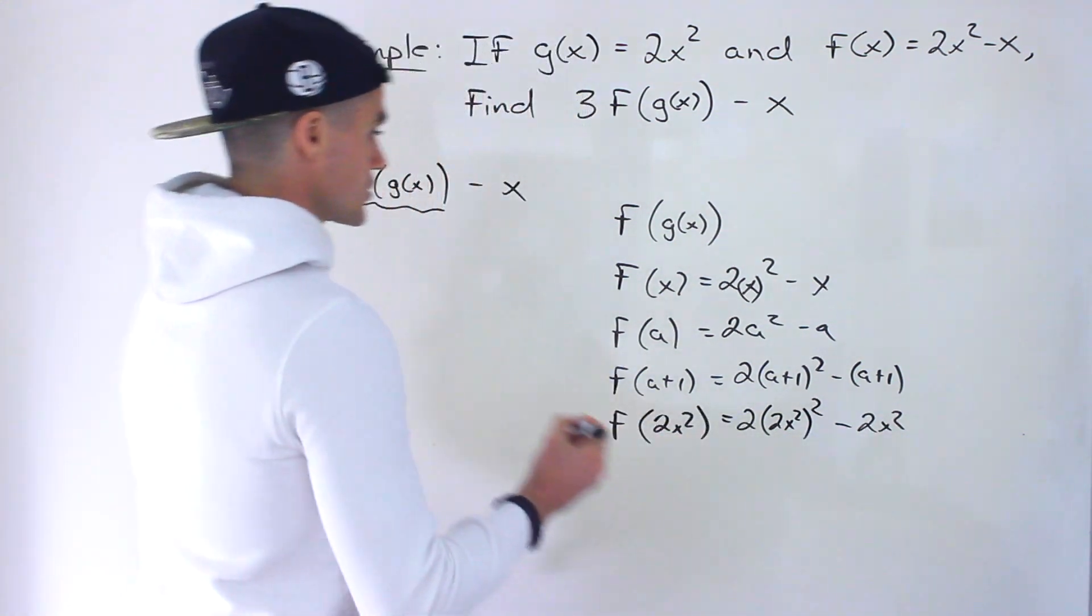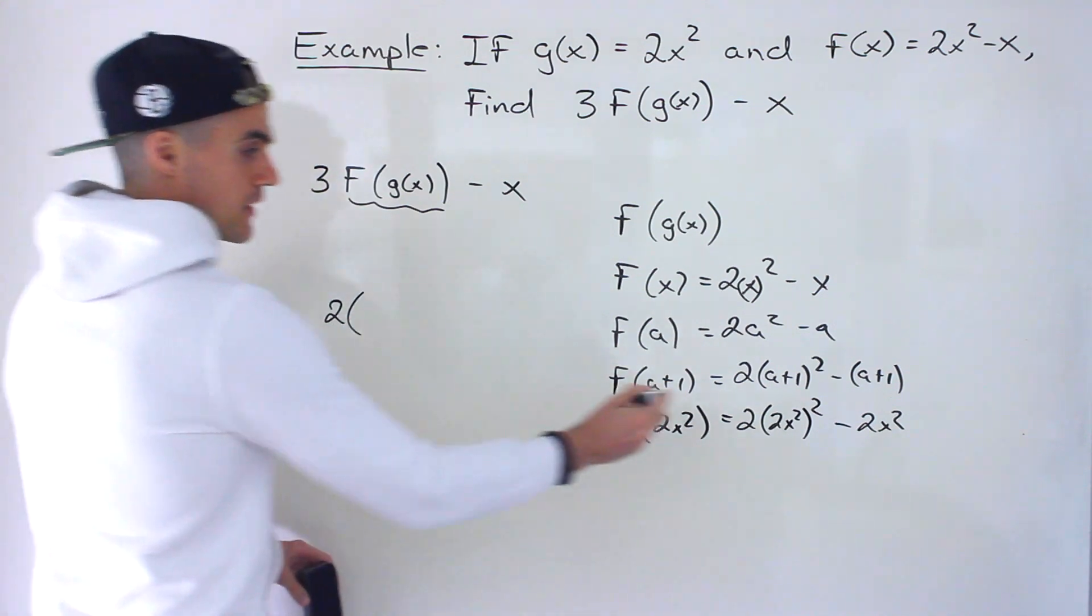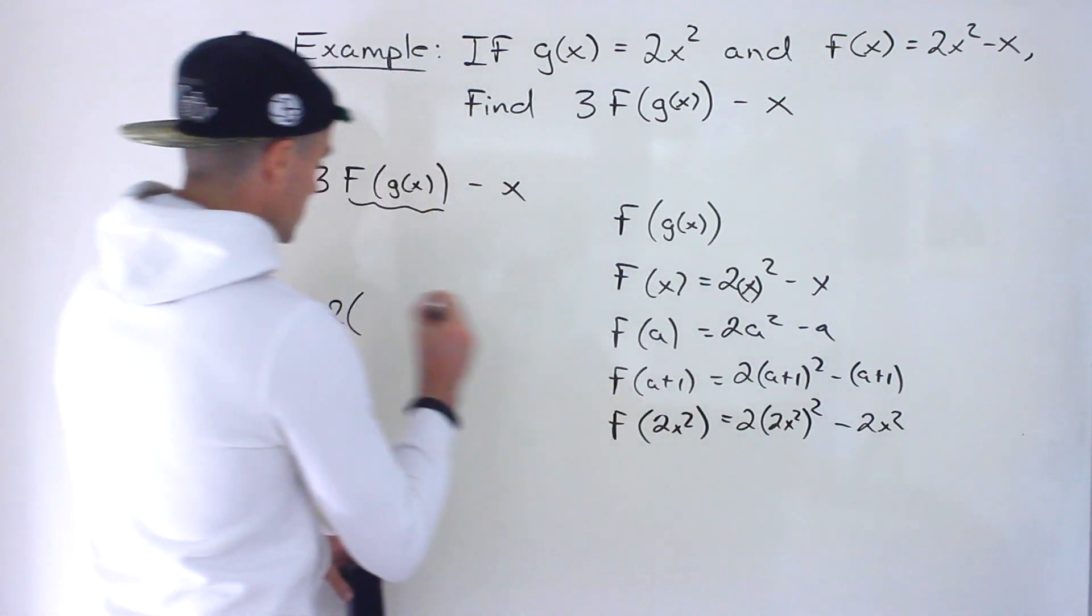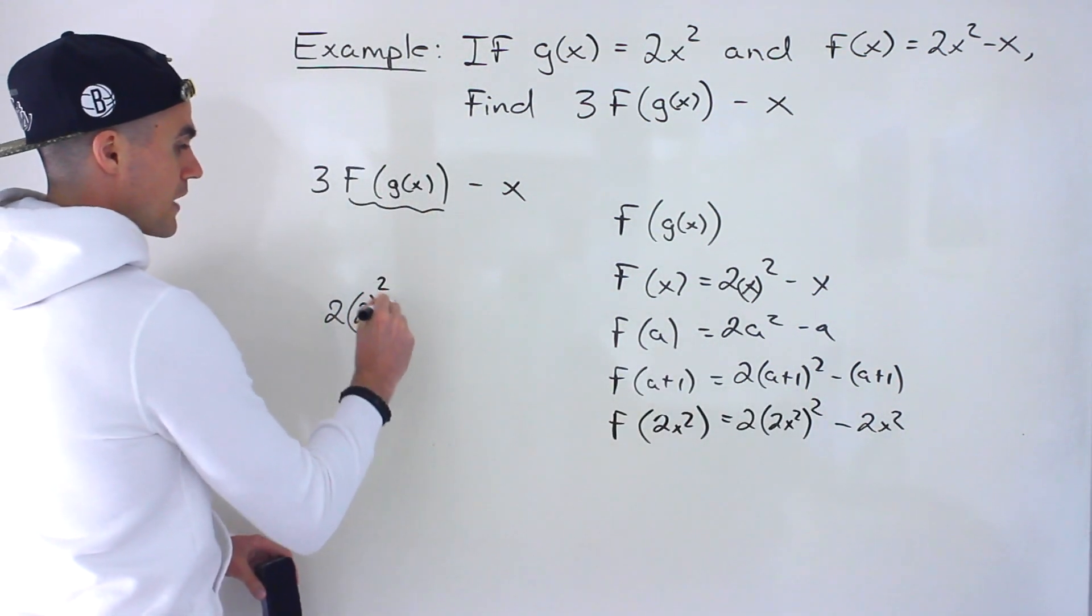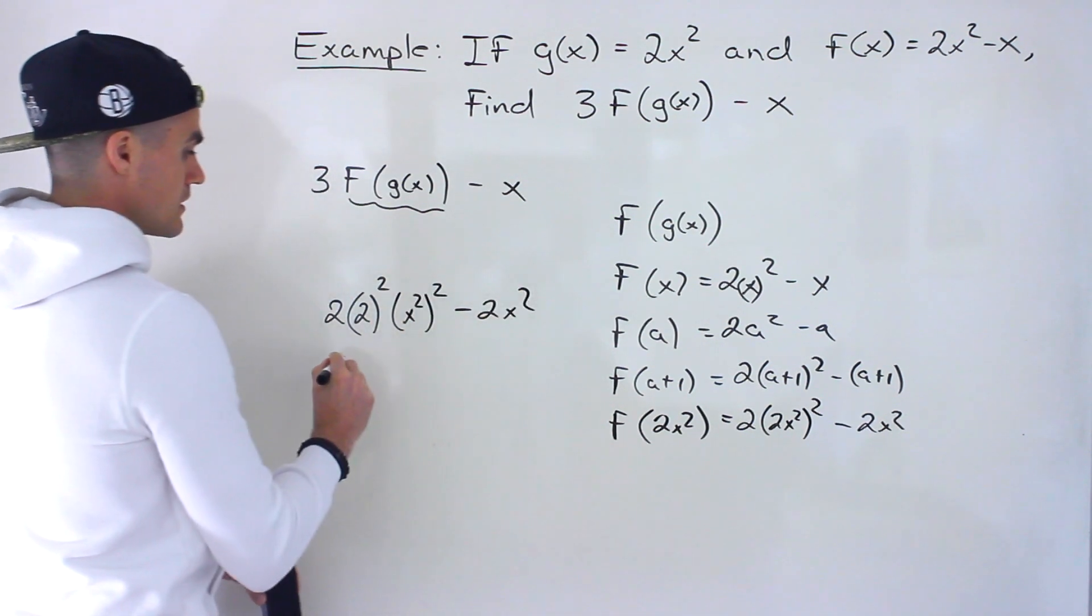So that right there is what f of g of x is going to be. Let's simplify this. We would have 2 times the quantity 2x² squared. So the 2 is going to go to the power of 2, and x squared is going to go to the power of 2, and then we have minus 2x squared.